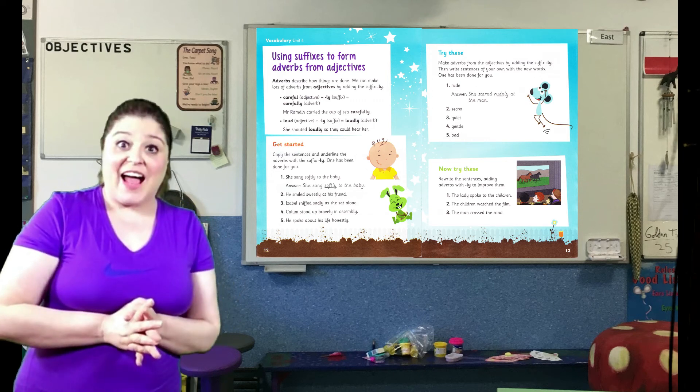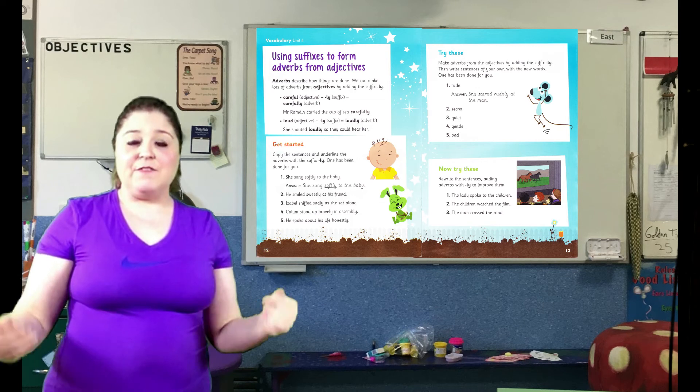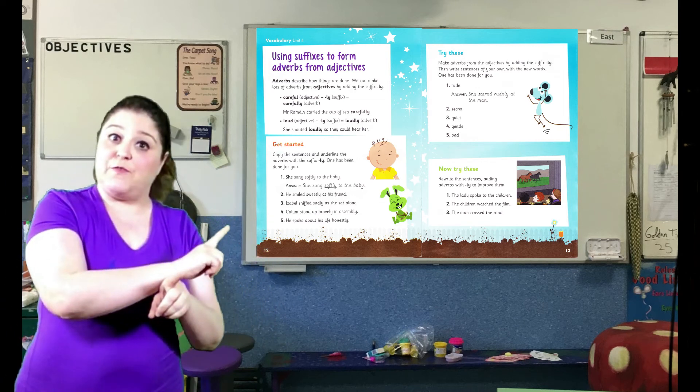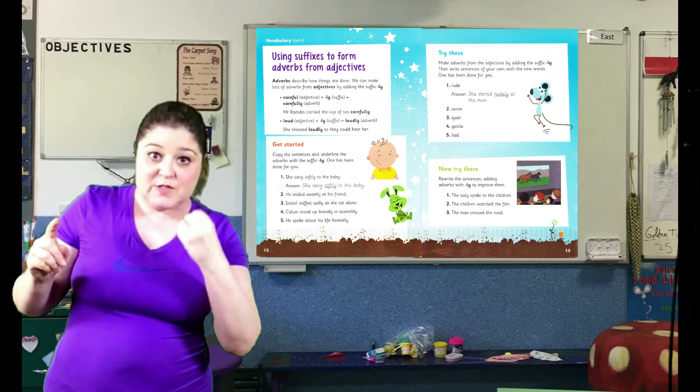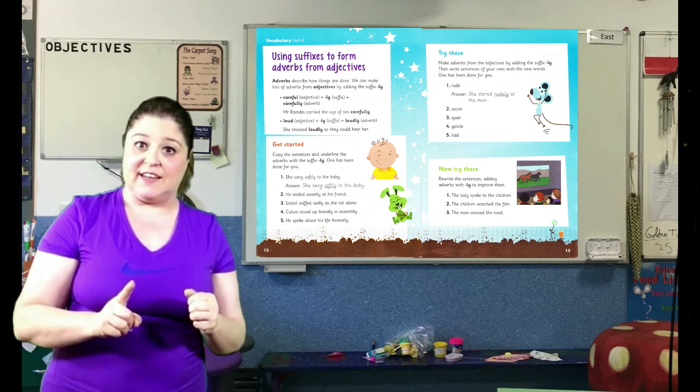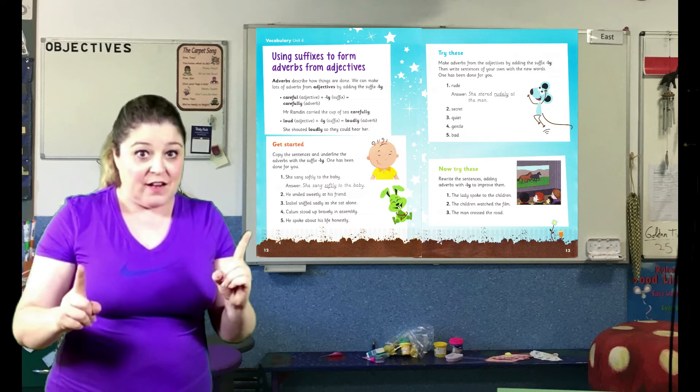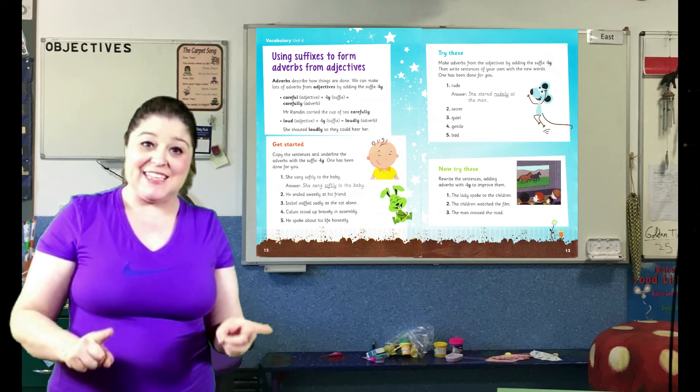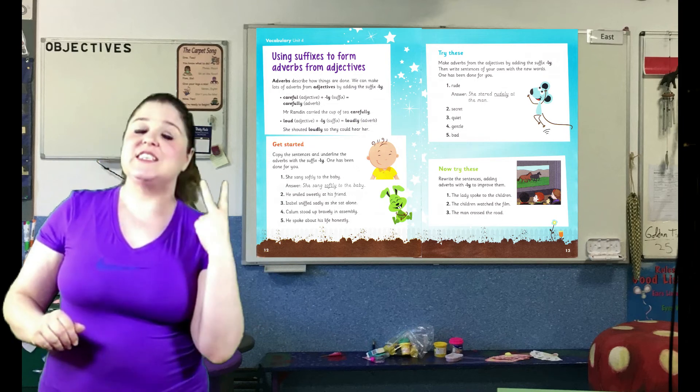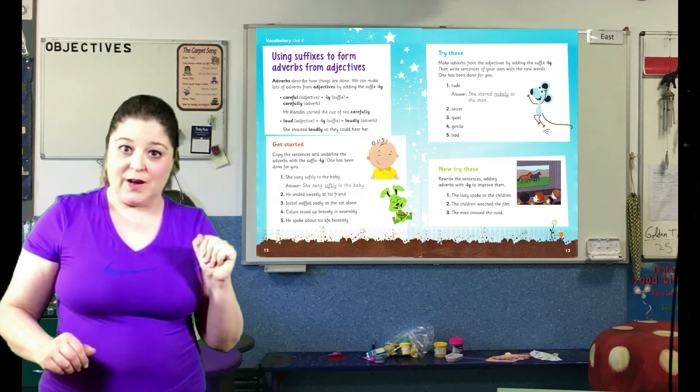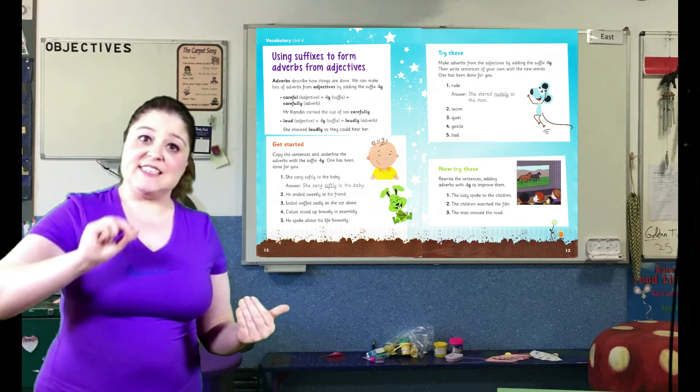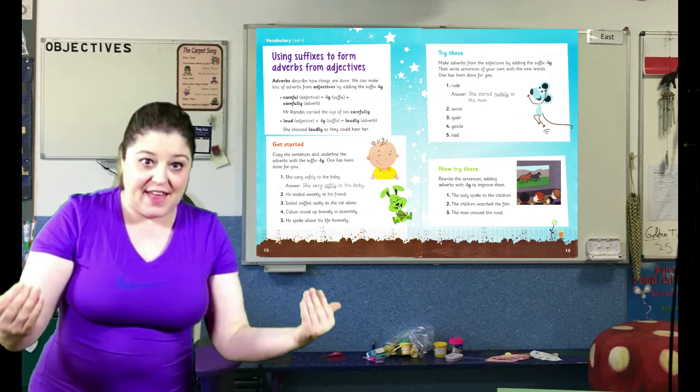In the try these, they have adjectives for you. You need to do what we did before. And you need to turn those adjectives into adverbs by adding the suffix L-Y. That was like our first activity. Then, you take the adverbs that you have made and put them into sentences. So that, ladies and gentlemen, is like our second activity. You take the adjectives and make them into adverbs by adding the suffix L-Y. And then, you write a sentence.